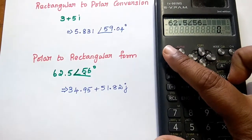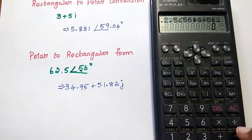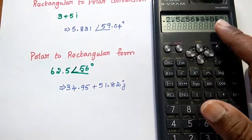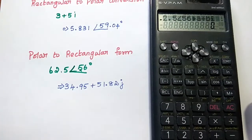For that, you can press SHIFT and then minus sign. SHIFT minus means rectangular form. You can see A plus Bi. Then you can press equal to sign.